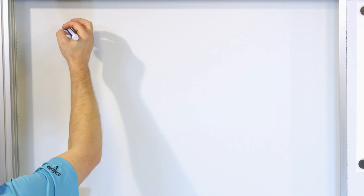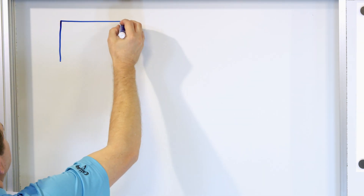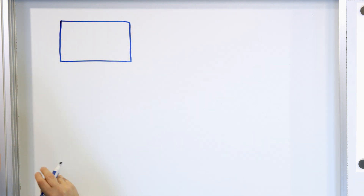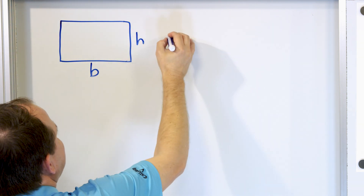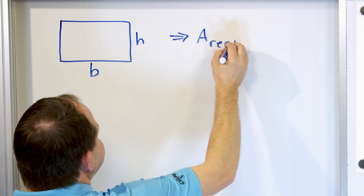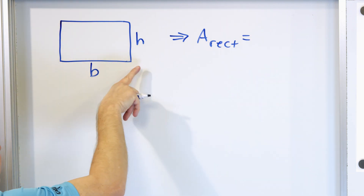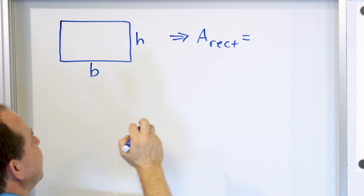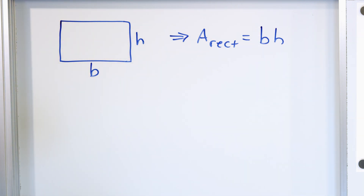But before we do that, let's take a trip down memory lane and talk about a couple of things. Let's first talk about a rectangle. This is a rectangle — it has a base B and a height H. What is the area of this? The area of a rectangle is just the length times the width, but in this case one side is B and one side is H, so it's base times height. The area of the rectangle is base times height.